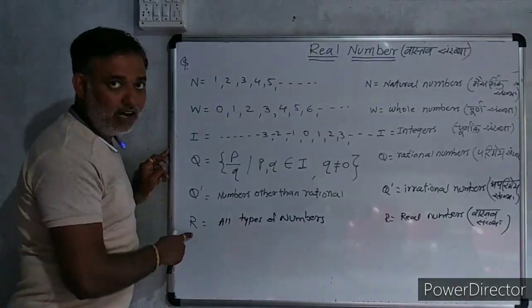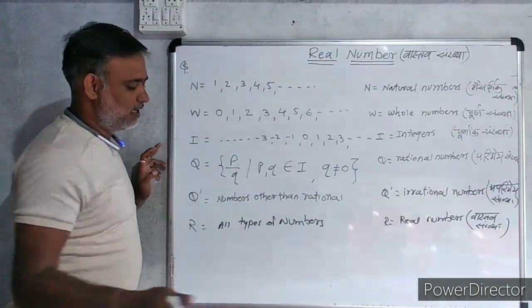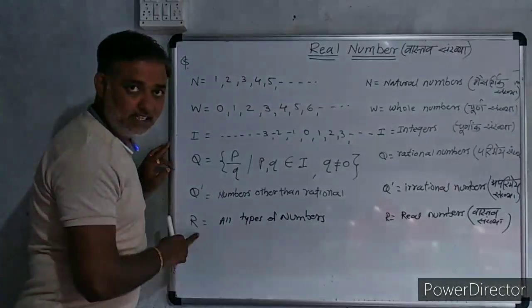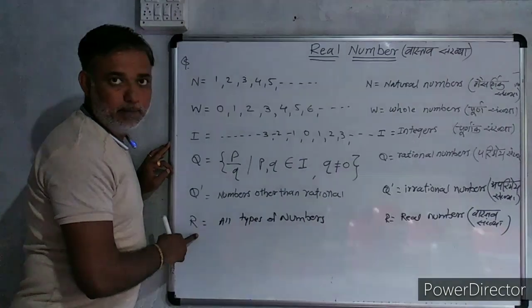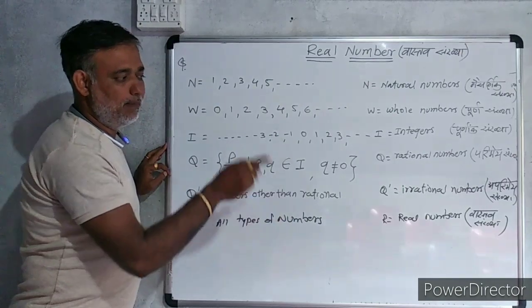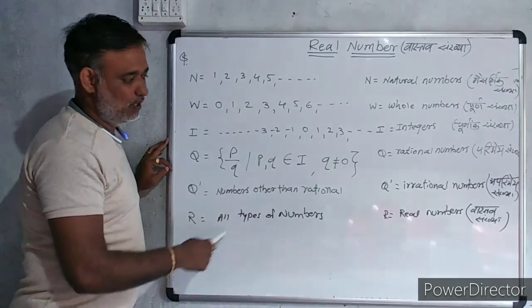And the last, that is the set of R. All types of numbers. All the numbers included in this set. And it is called real numbers.